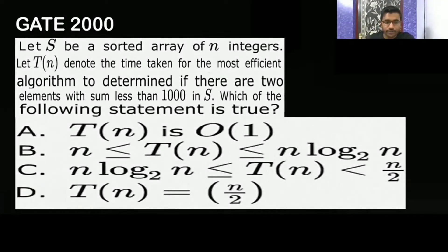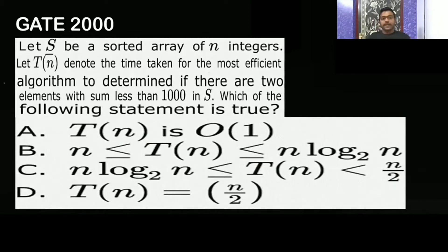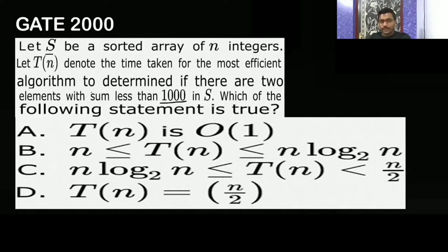In GATE 2000, they asked this question. Let S denote a sorted array of n integers. Let T(n) denote the time taken for the most efficient algorithm to determine if there are two elements with sum less than 1000 in S. Which of the following statements is true?